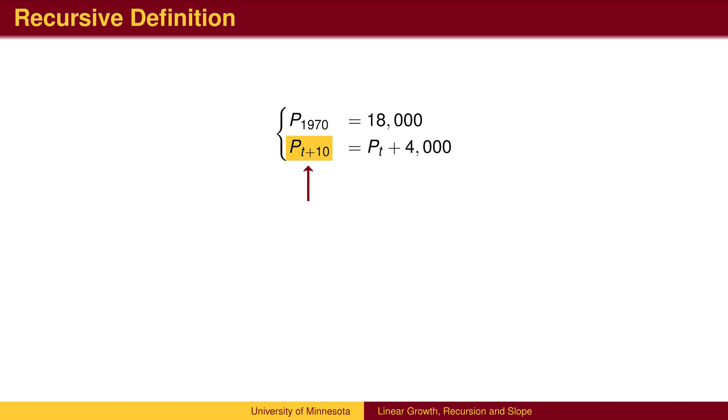On the left-hand side, the subscript is t plus 10, and on the right-hand side, the subscript is t. This equation tells us how to use the population at a certain time t to calculate the population 10 years later at time t plus 10.